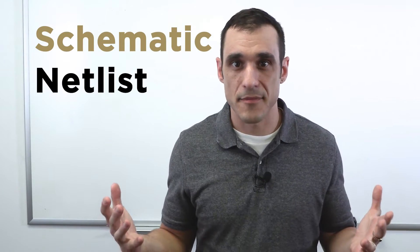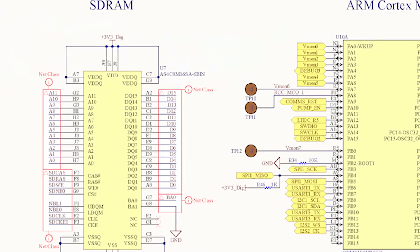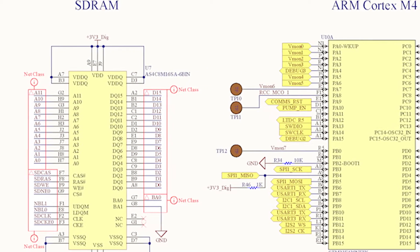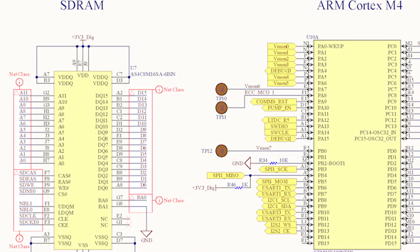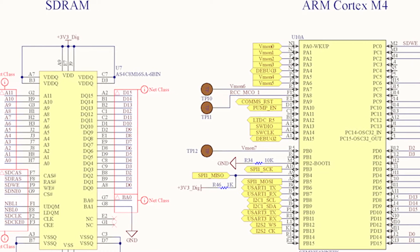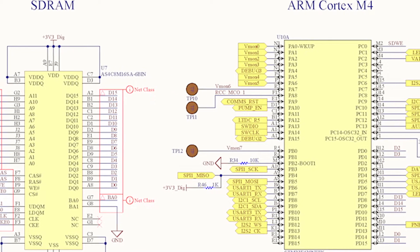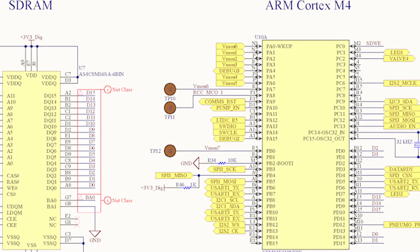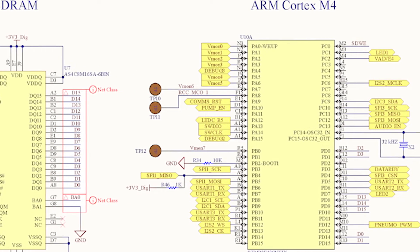So what is a schematic netlist? Within your schematics, you have all of your components. Your components contain a lot of CAD data that gets used inside the PCB layout. The schematic netlist has to reflect the connections between all of your components in your schematics and then match that in the PCB layout.